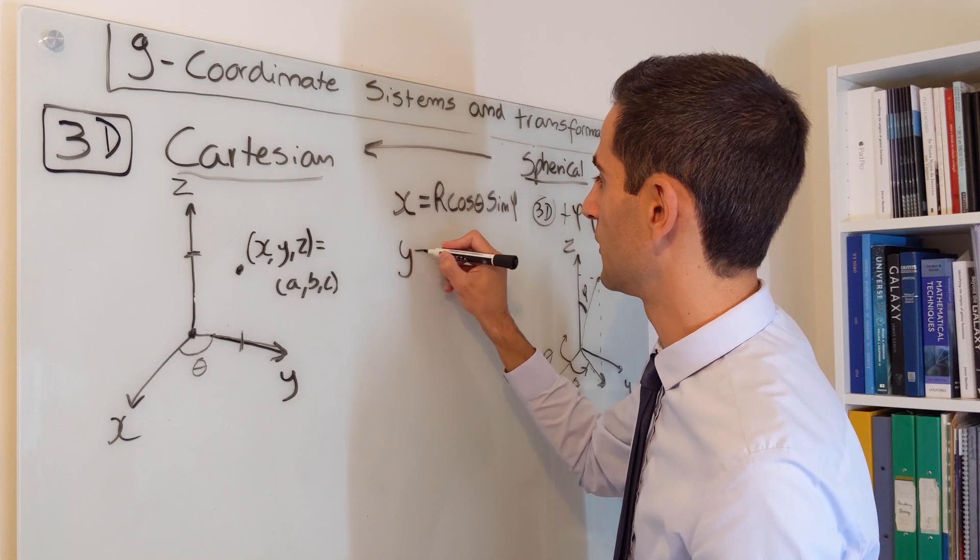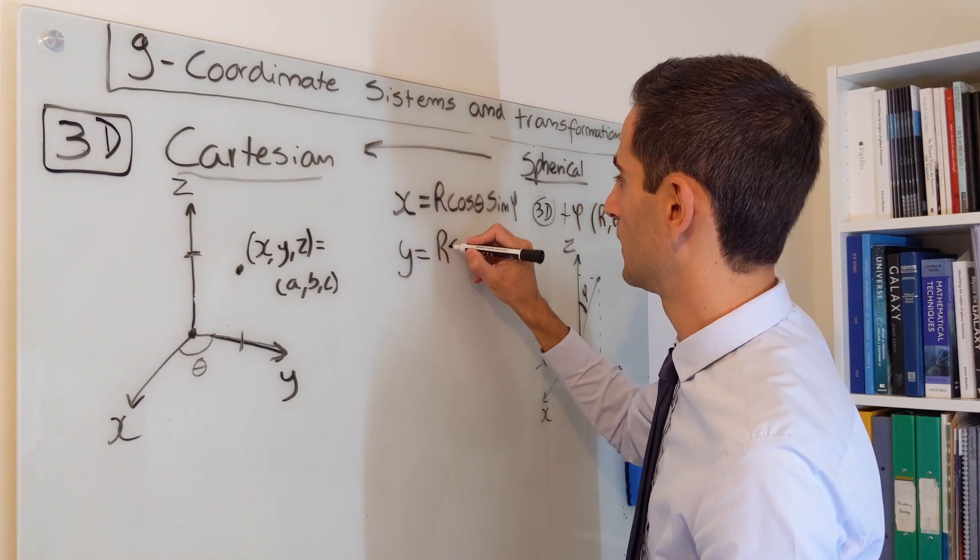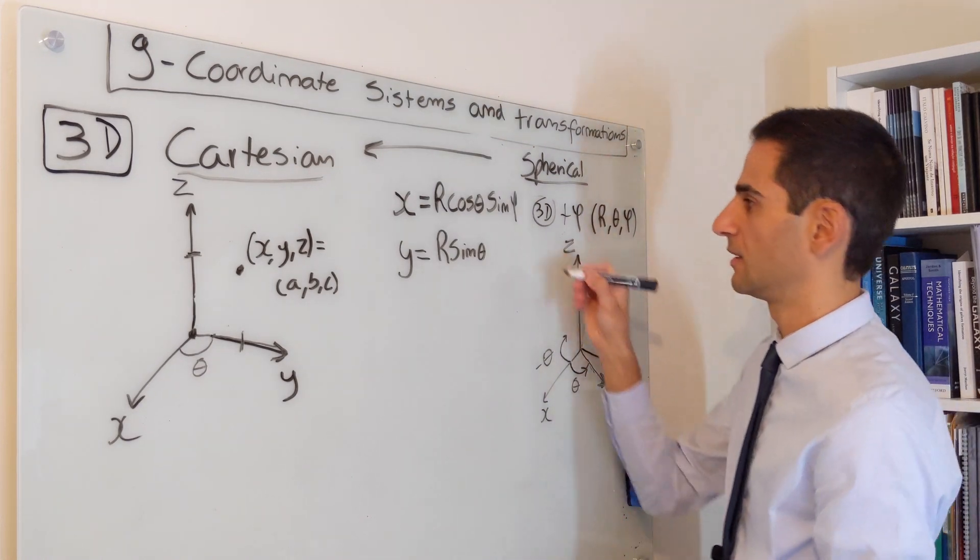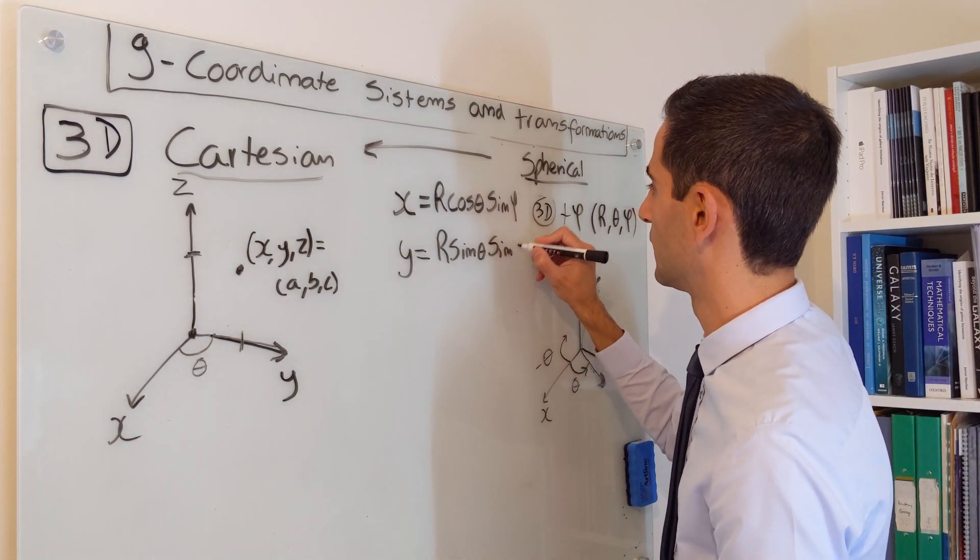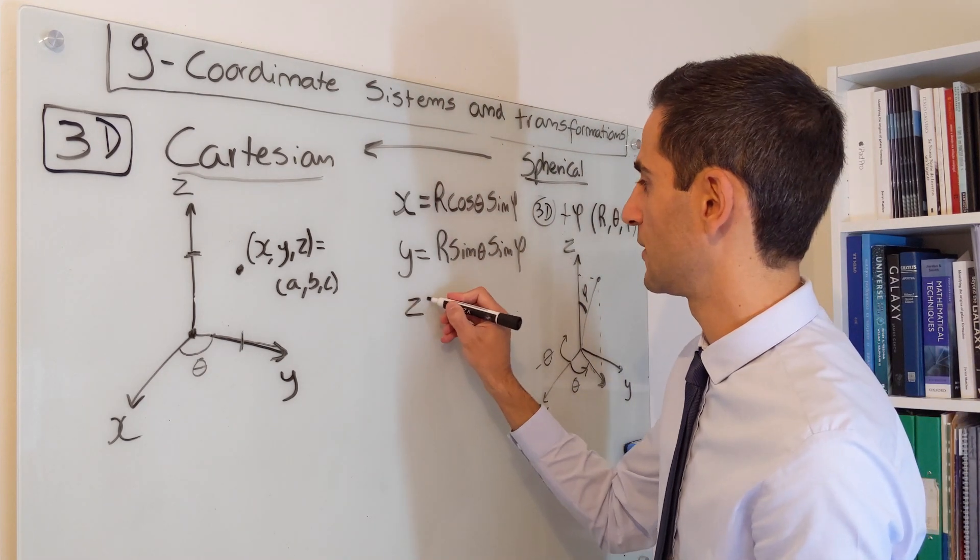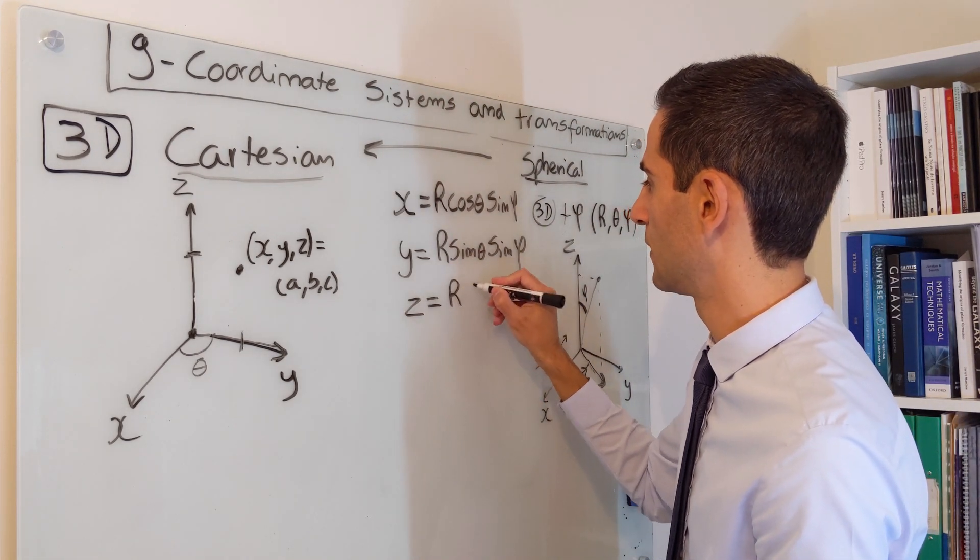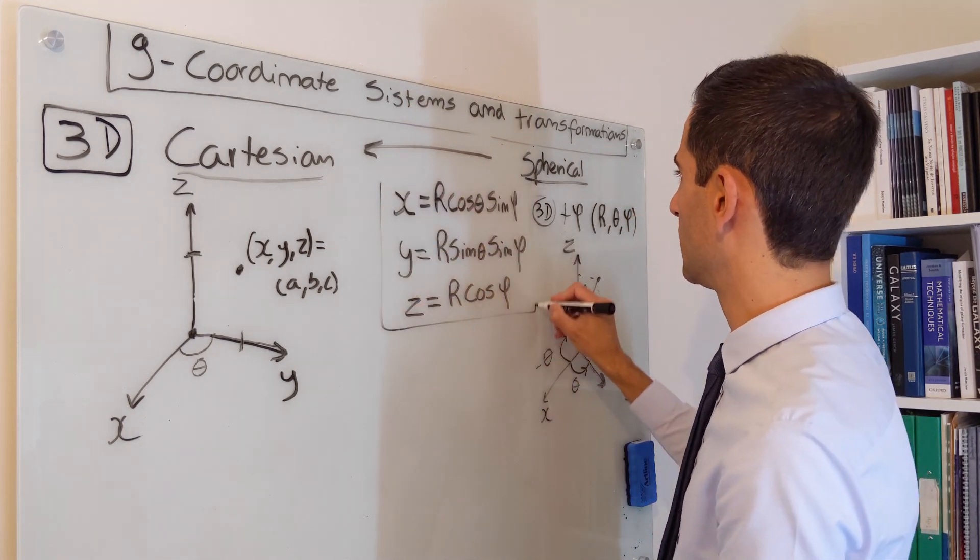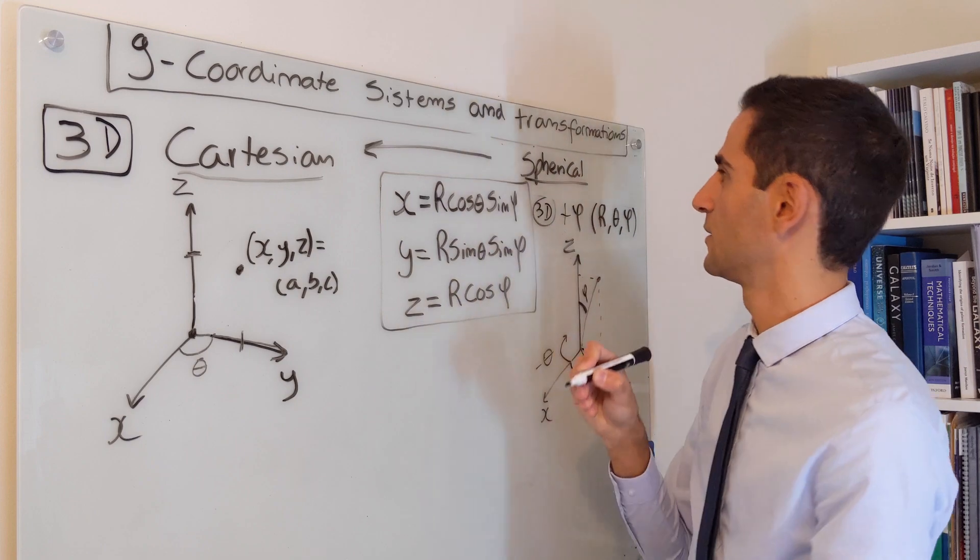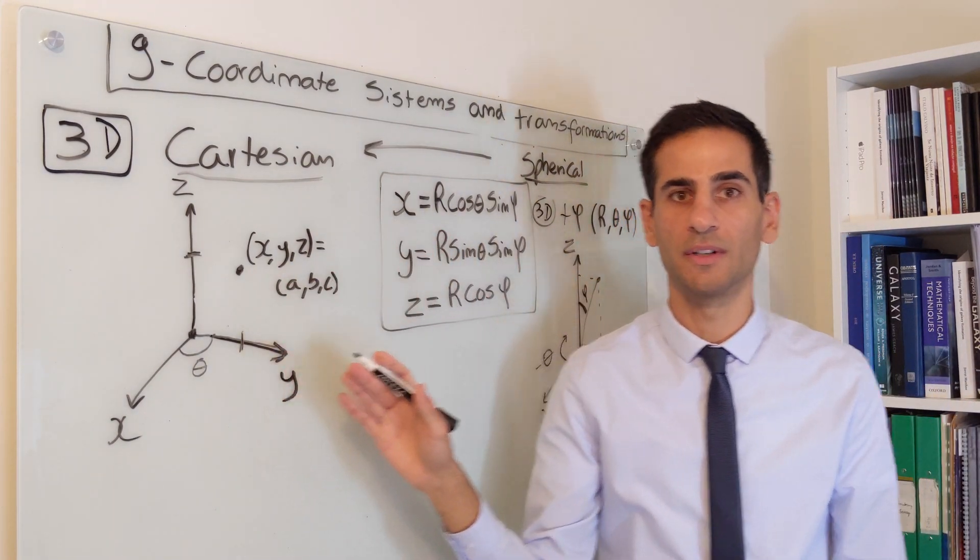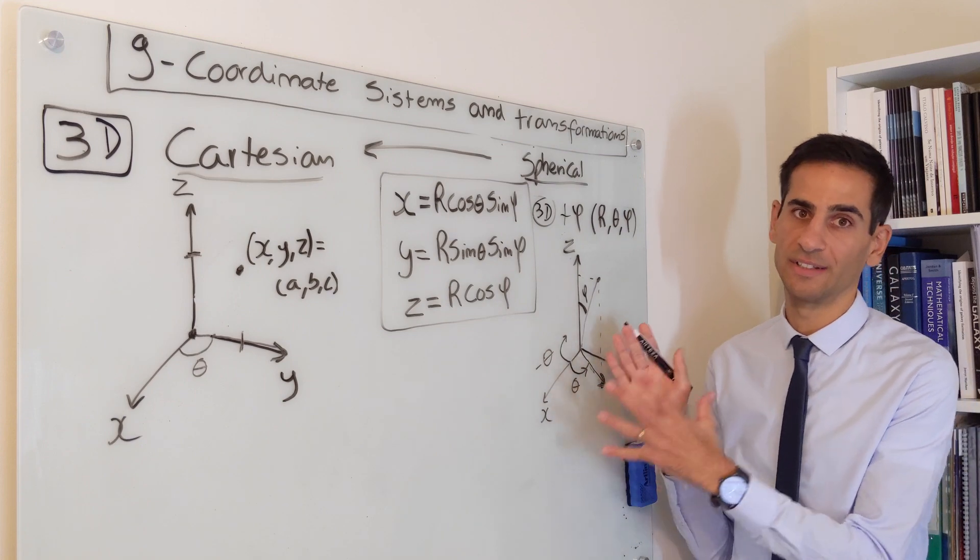For y it will be very similar, we get r sine theta as before and then multiplied by sine phi. And finally, because of the way we're defining, z is very simply given by r cos of phi.